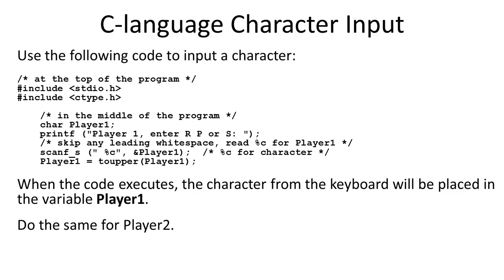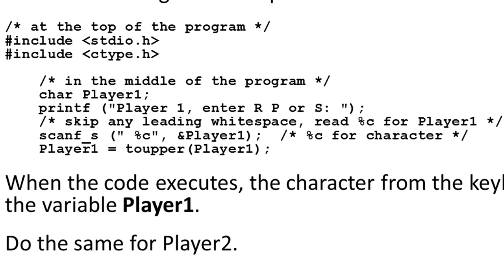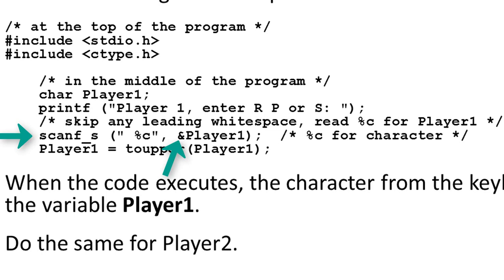Let's take a peek at how the C language does character input. We need to include stdio.h. I'll define the character data type for player 1 and use printf to output the message 'player 1, input R, P, or S'. I'll use scanf_s to input the character from the keyboard: scanf_s("%c", &player1). The percent c identifies that we're inputting into a character data type, and the ampersand means 'address of' — so we're passing the address of the variable player1 to scanf so that scanf will know where to put the result.